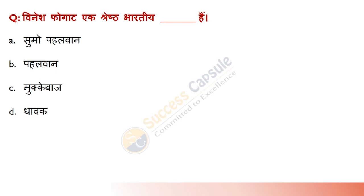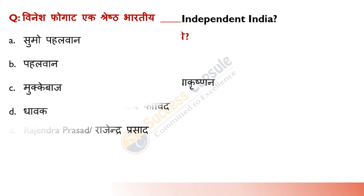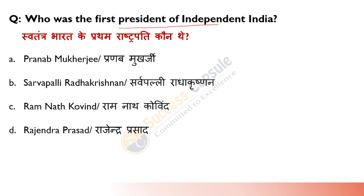Vinesh Phogat is related to wrestling. She received the Rajiv Gandhi Khel Ratan Award in 2020. Always associate players with their respective sports when answering award-related questions. Dr. Rajendra Prasad served as President for two consecutive terms — from 1950 to 1962 — and he was also given the Bharat Ratna in 1962.